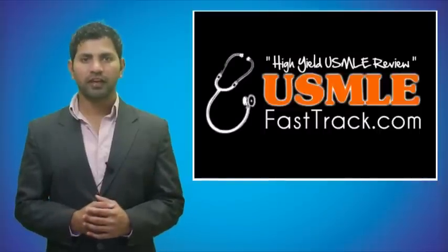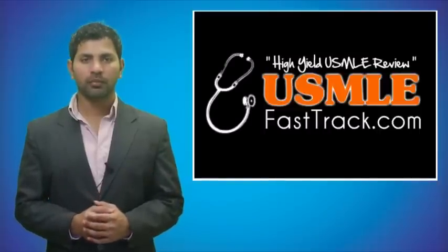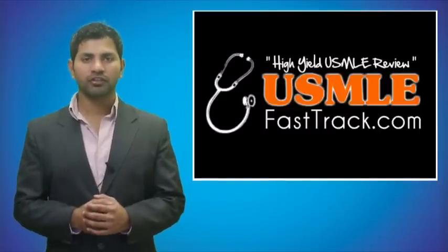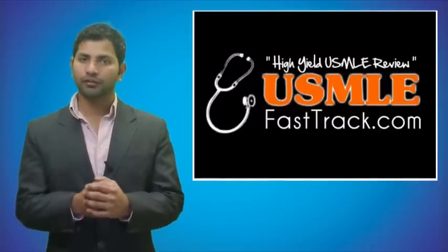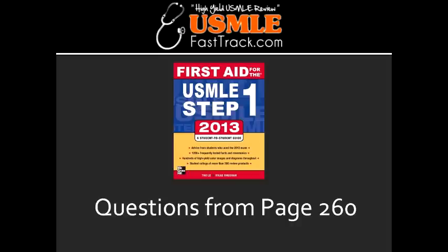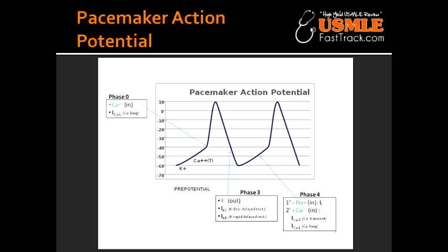Welcome to USMLEfasttrack.com. The section we're going to talk about today is from First Aid for the USMLE Step 1, 2013 edition, page 260: Pacemaker action potential. Where does the pacemaker action potential occur? Pacemaker action potential occurs in the SA and the AV nodes.